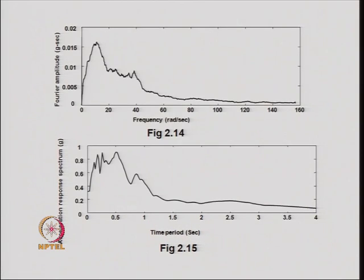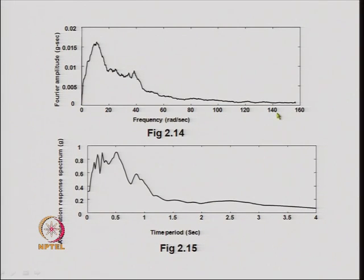Taking the El Centro earthquake as an example with xi equal to 0.05, one can obtain S_d, S_v, S_a, and maximum energy and plot them against the period T_n. The energy spectrum shows maximum energy against time period. The Fourier amplitude spectrum and the acceleration response spectrum are also shown. Comparing the peaks: the energy spectrum peaks around 0.55 seconds, the Fourier spectrum around 0.58 seconds, and the acceleration spectrum around 0.51 seconds.